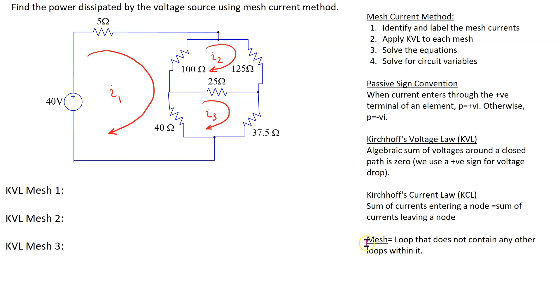A mesh does not contain any other loops within it. For this bridge circuit we can identify three meshes which we can label I1 to I3, and also we can assume any current direction for these meshes. Here clockwise direction has been assumed.